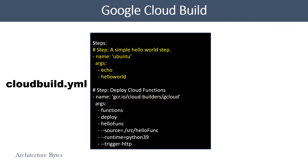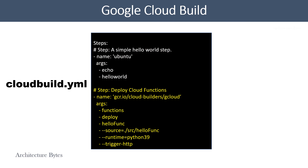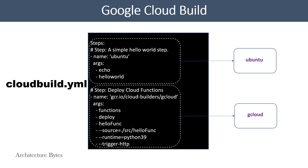The first step will run in an Ubuntu container and simply echo 'Hello World'. The second step uses a ready-made Cloud Builder image, gcloud, to deploy a Cloud Function. Both steps run in separate containers.